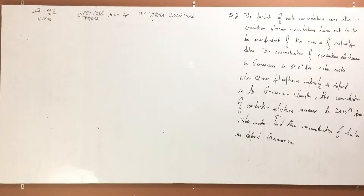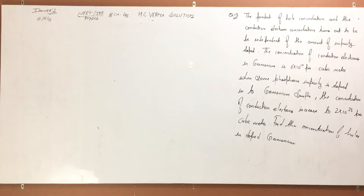Hello guys, welcome to the channel. Question number 13, chapter number 45, S.C. Baba. The product of the hole concentration and the conduction electron concentration turns out to be independent of the amount of impurity doped. The concentration of conduction electrons in germanium is 6 into 10 raised to the power 19 per cubic meter. When some phosphorus impurity is doped into a germanium sample, the concentration of conduction electrons increases to 2 into 10 raised to the power 23 per cubic meter. Find the concentration of holes doped into germanium.